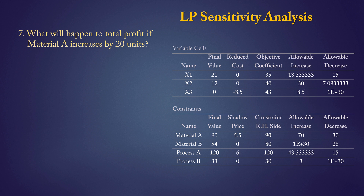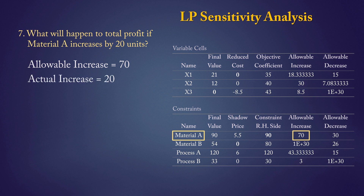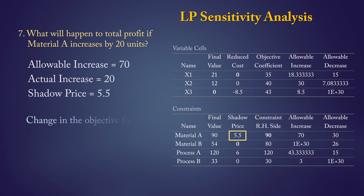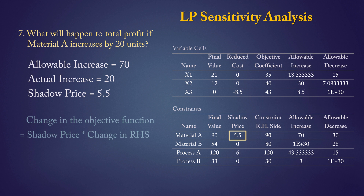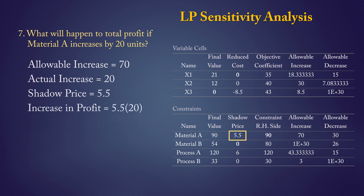Question 7: what will happen to total profit if the amount of material A increases by 20? From the output, the allowable increase for material A is 70, so an actual increase of 20 is allowed. This implies the shadow price of 5.5 applies for every unit of the 20-unit increase. The change in the objective function is shadow price times change in RHS: 5.5 times 20 equals 110. Total profit will increase from 1215 to 1325.